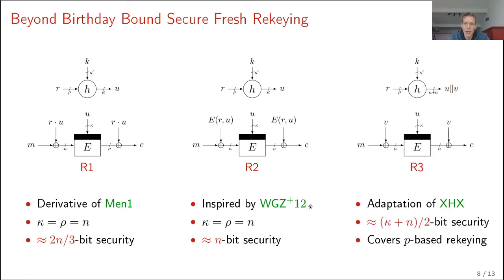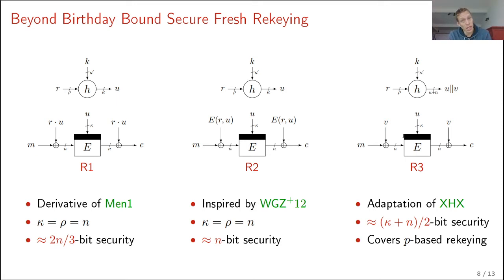The third construction, R3, is a simplification of XHX. Recall that XHX uses a universal hash function generating 3 subkeys; R3 only generates 2 subkeys, U and V that goes into the masking. This achieves n-bit security when the key size equals the block size. Interestingly it also covers permutation-based constructions: if kappa equals 0, you get birthday bound security.